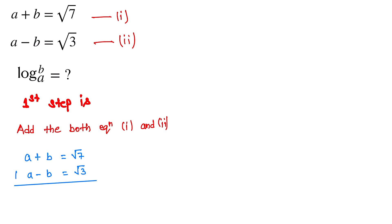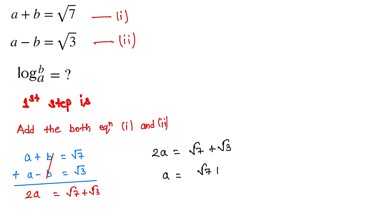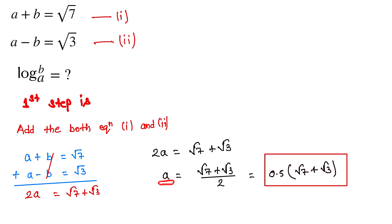When we add both equations, the b terms cancel. So we get 2a equals √7 plus √3, which means a equals (√7 plus √3) divided by 2, which is equal to 0.5 times (√7 plus √3).